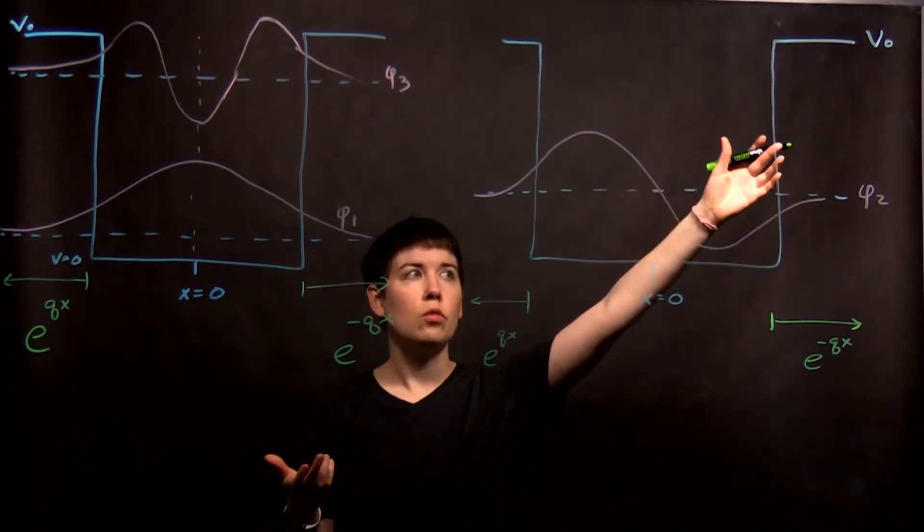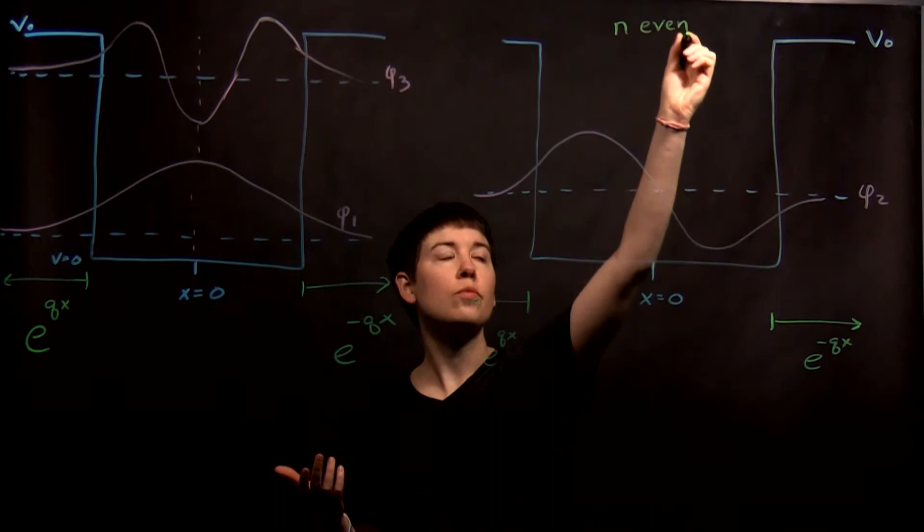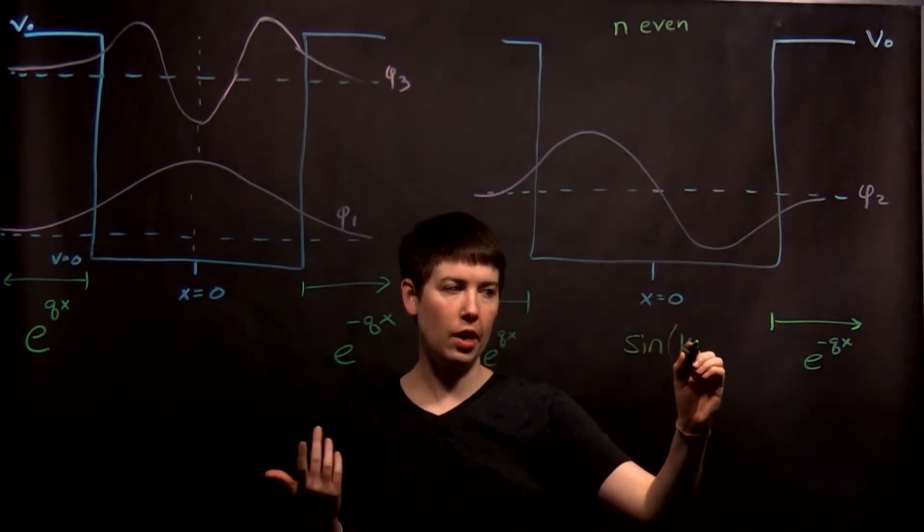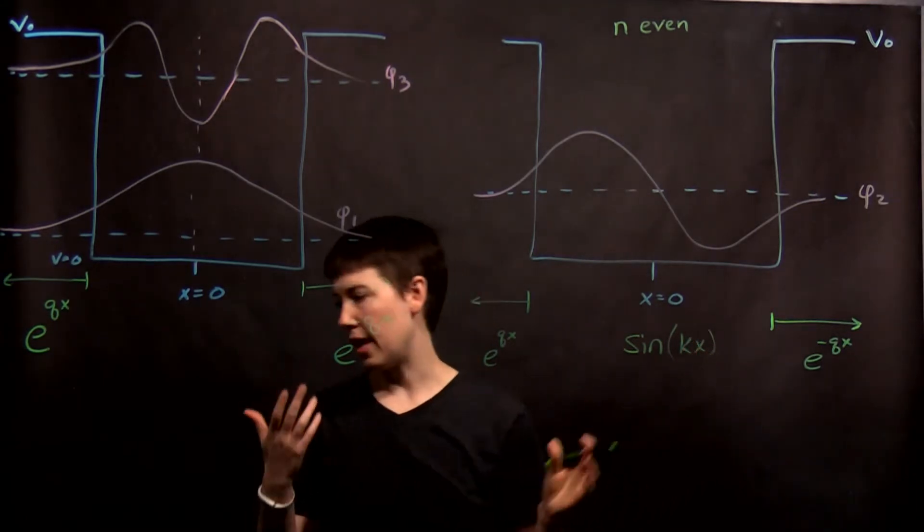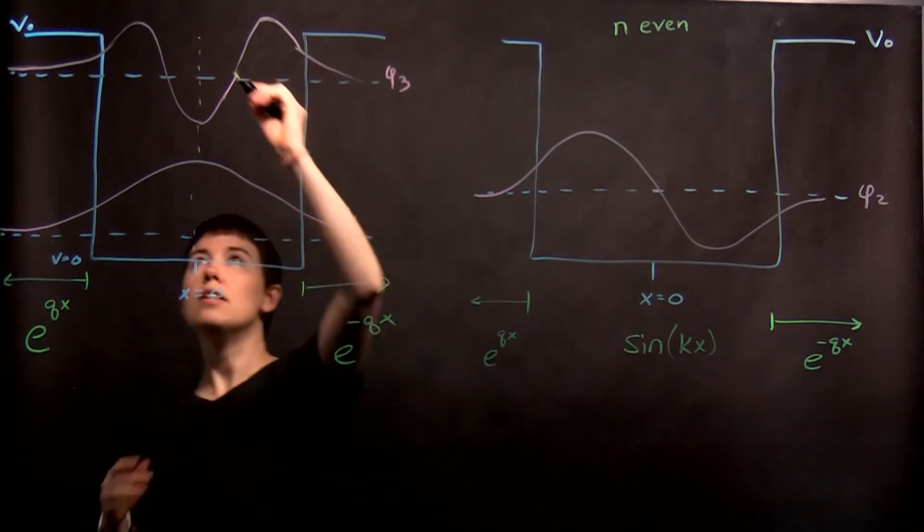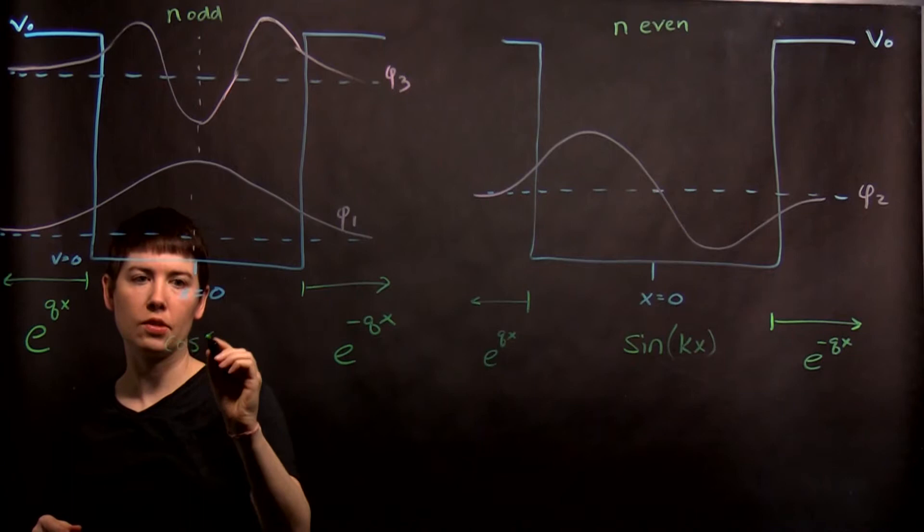So here, when we say n is even, so the quantum number is even, we have a sine function here, so sine of kx for instance. And when n is odd, we have cosine of kx.